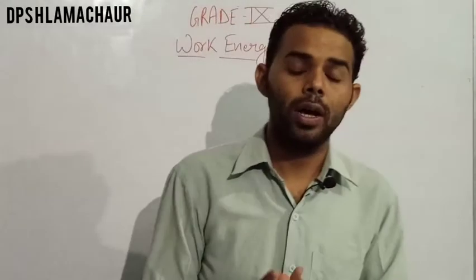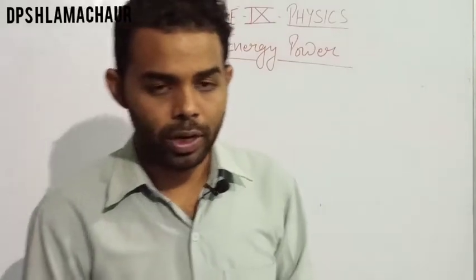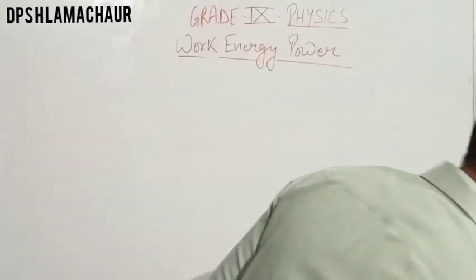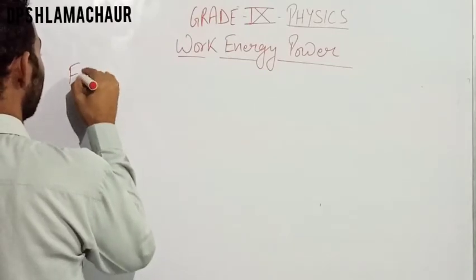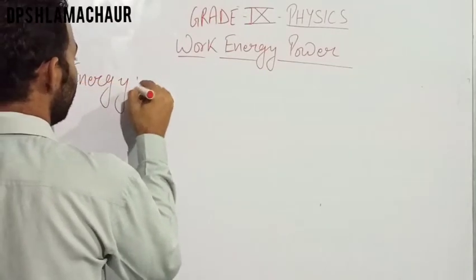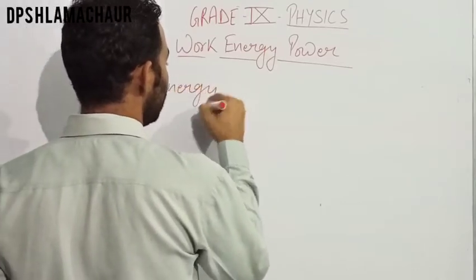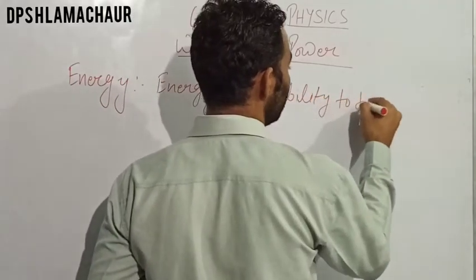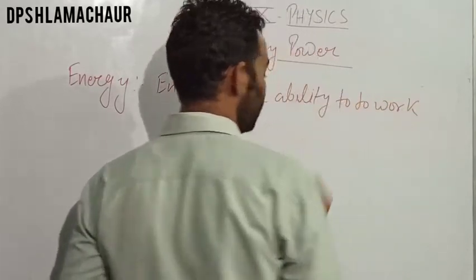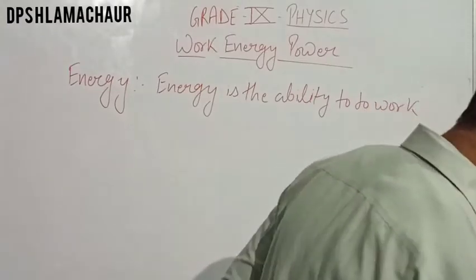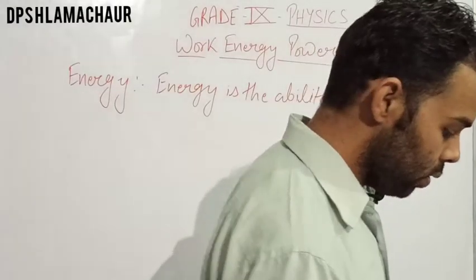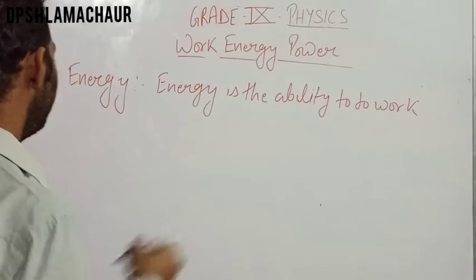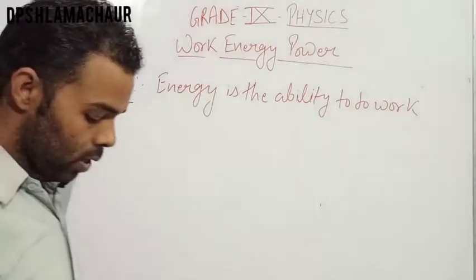That is why we say energy is the ability to do work — kisi kaam karne ki shamta ko hum energy bolte hain. Now let's write the definition: Energy is the ability to do work. Kisi kaam karne ki shamta hai. And this energy is equal to the work done — humari energy work done ke barabar hoti hai.